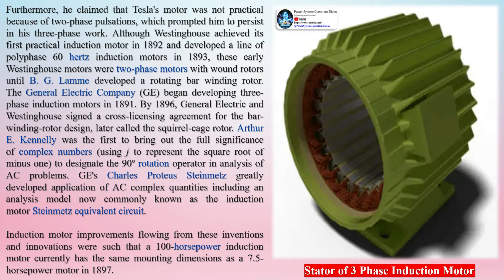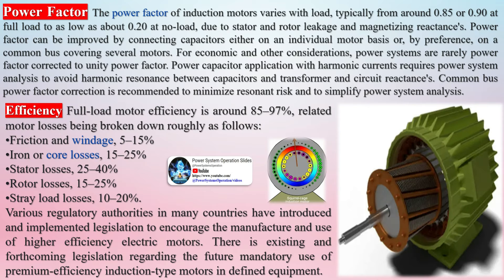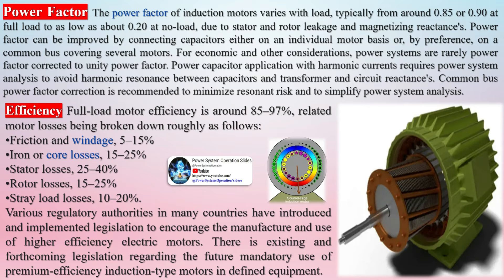Tesla described three motor types: one having a four-pole rotor forming a non-self-starting reluctance motor, another with a wound rotor forming a self-starting induction motor, and the third a true synchronous motor with a separately excited DC supply to the rotor winding. George Westinghouse, who was developing an AC power system at the time, licensed Tesla's patents in 1888 and purchased a US patent option on Ferraris's induction motor concept. Tesla was also employed for one year as a consultant. Steadfast in his promotion of three-phase development, Mikhail Dolivo-Dobrovolsky invented the cage rotor induction motor in 1889 and the three-limb transformer in 1890.